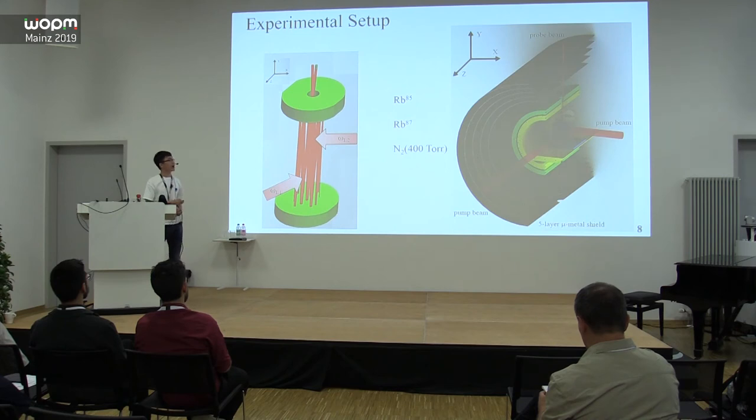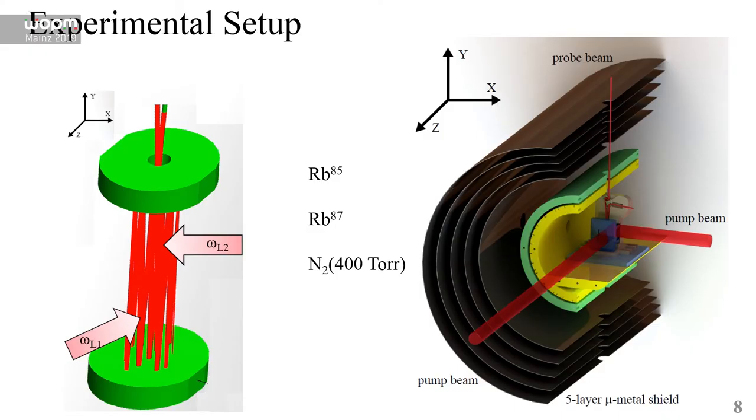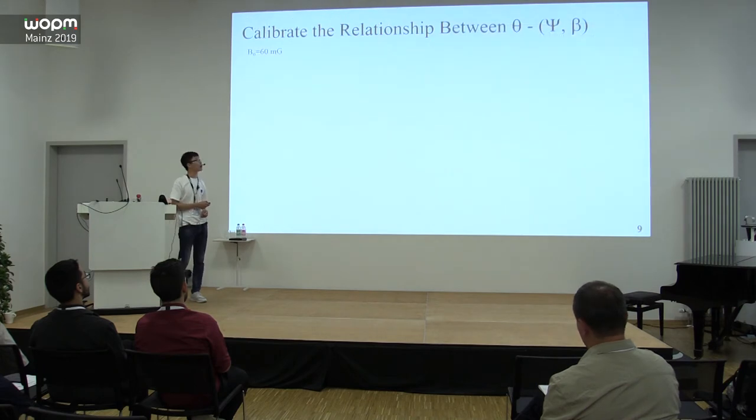We perform our experiment inside a five-layer mu-metal shield. The atom cell contains rubidium-85 and rubidium-87 and 400 Torr nitrogen as the buffer gas. The two pump beams are along the Z-axis and X-axis, and the probe beam is along the Y-axis.